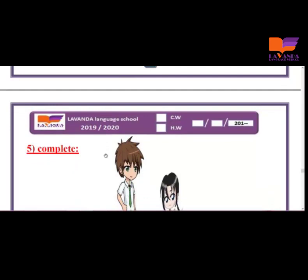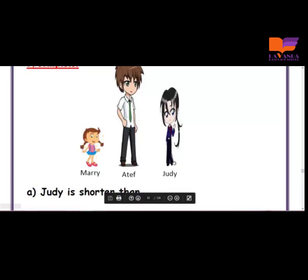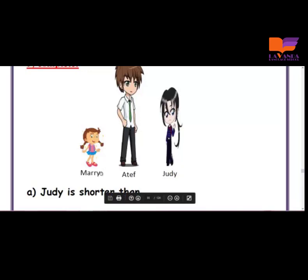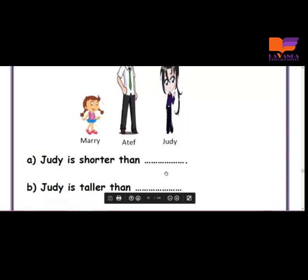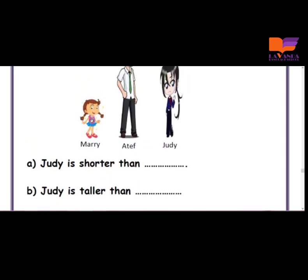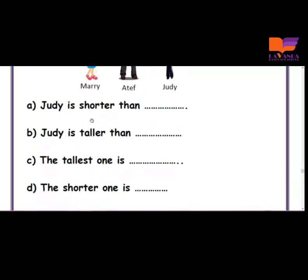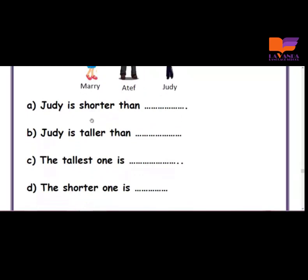I need to solve these examples with you. We have three children: Mary, Atif, and Judy. The first question asks: Judy is shorter than who? Judy is shorter than Atif. Judy is taller than Mary. The tallest one is Atif, and the shortest one is Mary.